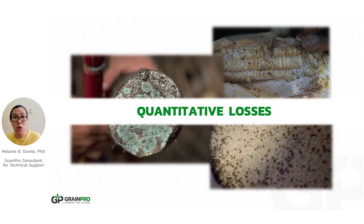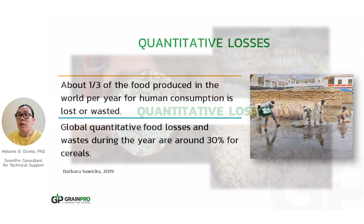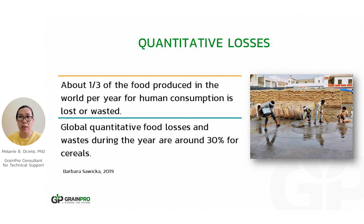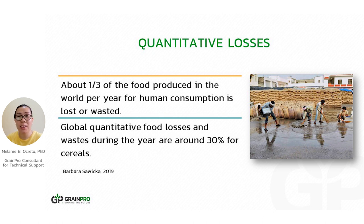We have various types of losses, classified into three. The first one is quantitative losses. About one-third of the food produced in the world per year for human consumption is lost or wasted. If we consider cereals, the waste is about 30%, and that includes grain — rice, corn, wheat. The quantified losses worldwide for cereals are about 30%.